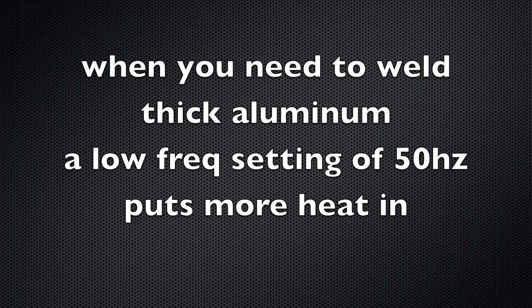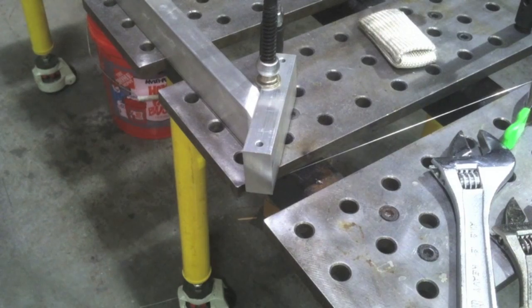Another tip is when you need to weld really thick aluminum, setting a low frequency of about 50 Hertz you'll get more heat out of your machine that way.